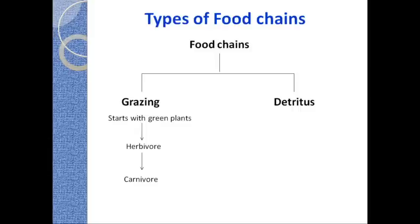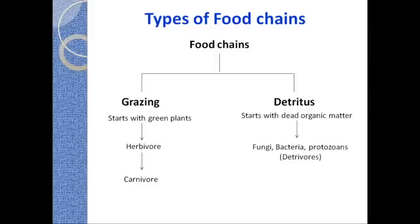Detritus food chains are food chains which start with dead and decayed organic matter. The flow of energy in such food chains goes from dead and decayed material to the detritivores — those living organisms which feed on dead or detritus material. Detritus means dead, so all animals which feed on dead and decayed material get their energy from that decayed material. Some of the detritivores in the environment are fungi, bacteria, and protozoans.